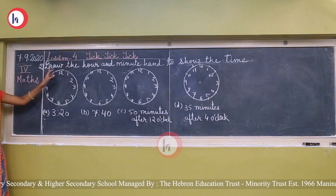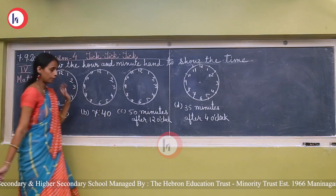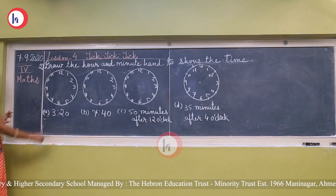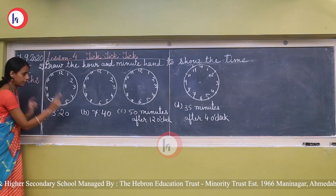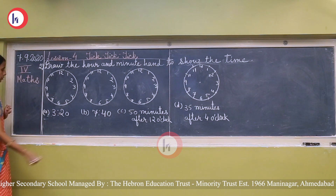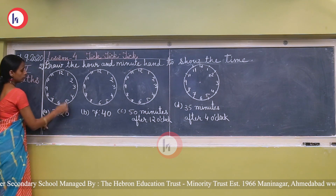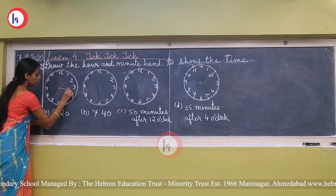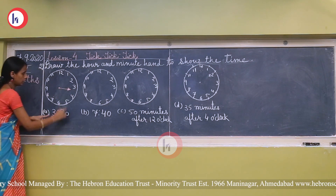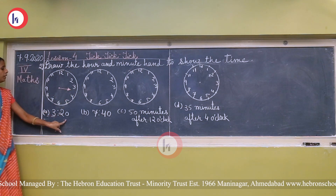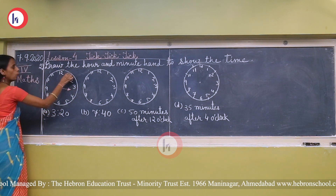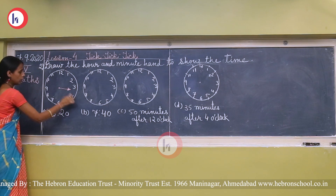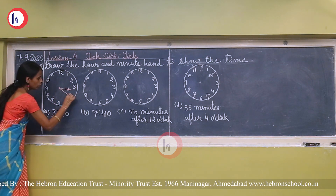Our next question is: draw the hour and minute hands to show the time. The first time given is 3:20 — meaning 3 hours completed and 20 minutes completed. First, draw the hour hand: since 20 minutes have also passed, it will be between 3 and 4. For the minute hand, count in fives: 5 for 5, 5 for 10, 5 for 15, 5 for 20 — so the minute hand will be on 4.